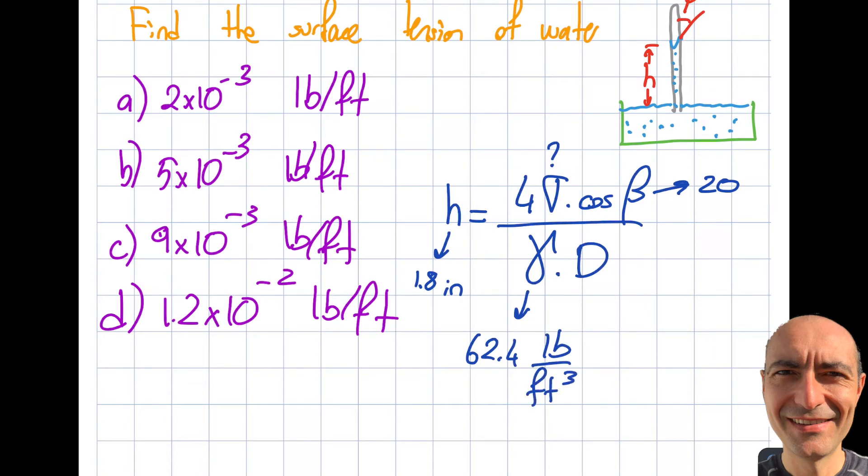That is the specific weight of water in the British gravitational system. And the diameter of the tube is given to me as 0.01 inches. Note that I'm writing on purpose inches so I don't get confused how to convert that.